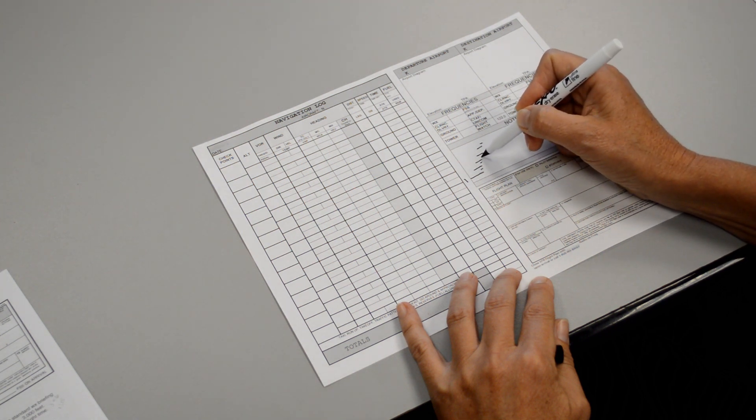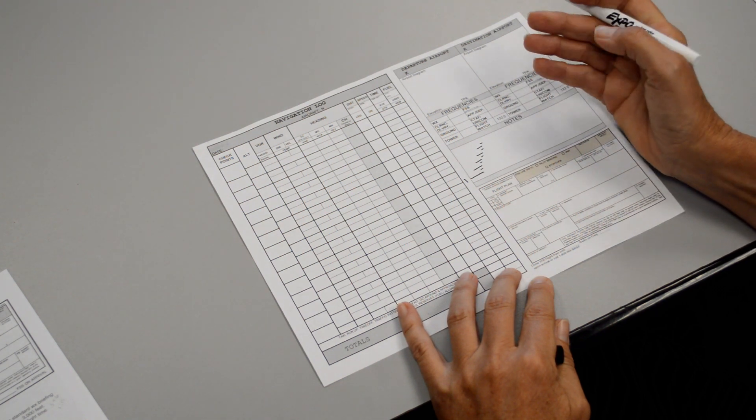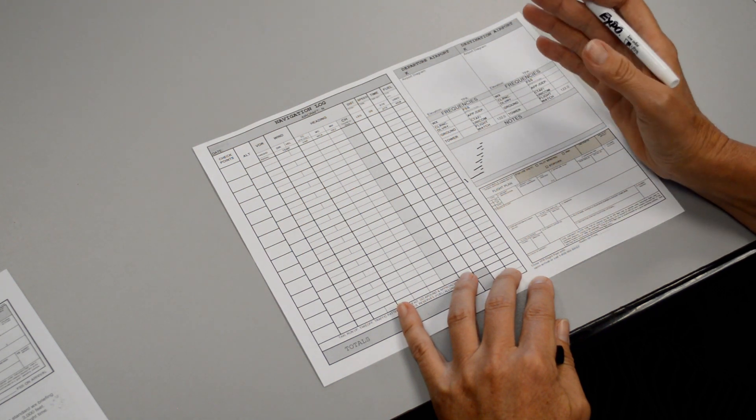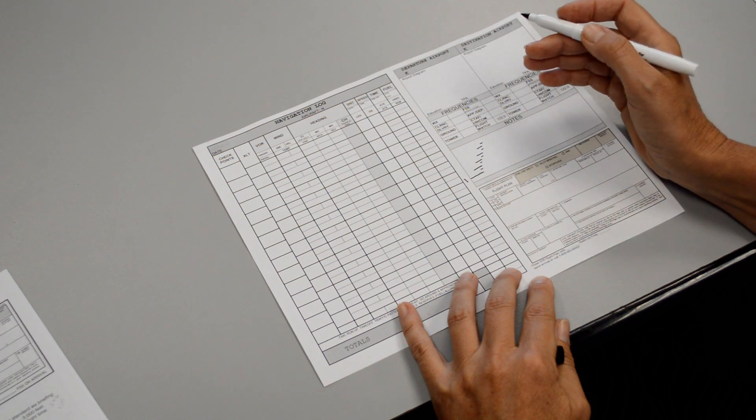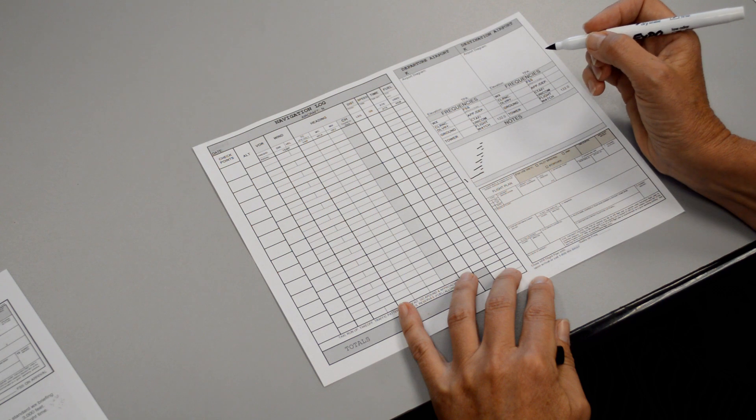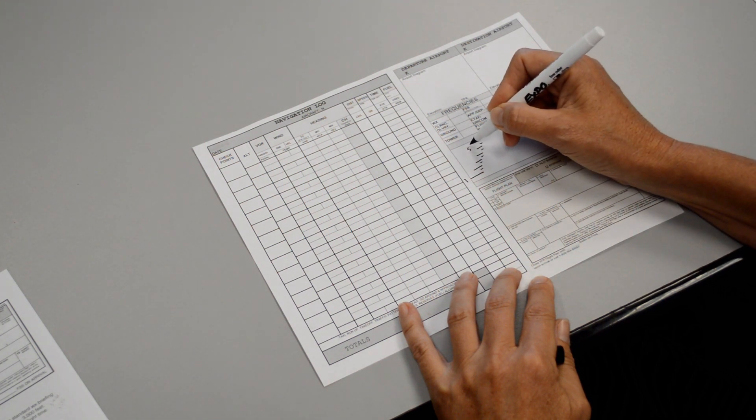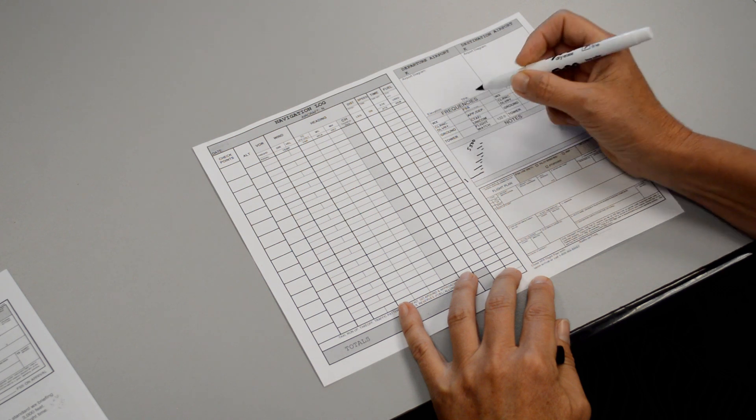So on average, we climb about 500 feet per minute. We've been flying this airplane for 12 or 13 lessons and we notice that most of the time we climb out about 500 feet. So how many minutes would it take us to climb from 1,000 feet up to 5,500 feet?